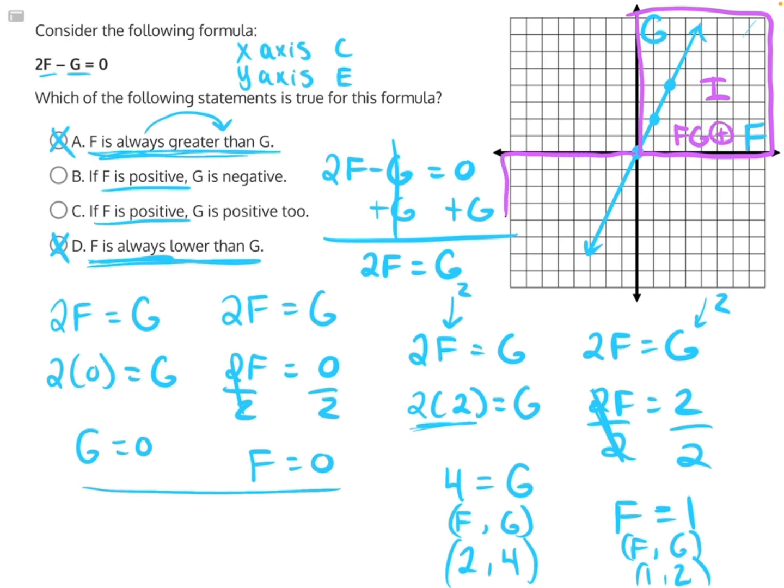And we have values in quadrant three, where the opposite is true. F and G are both negative. We do not have any values present in the two quadrants where they can have opposite signs. In quadrant two, we have negative F but a positive G. And in quadrant four, we would have positive F and negative G. But there are no values there. So B is incorrect.